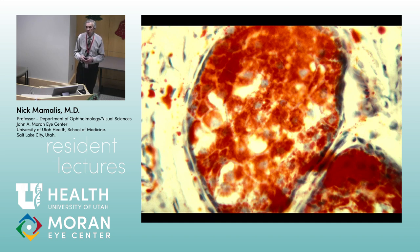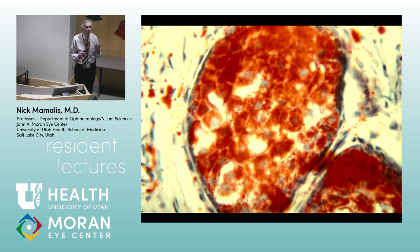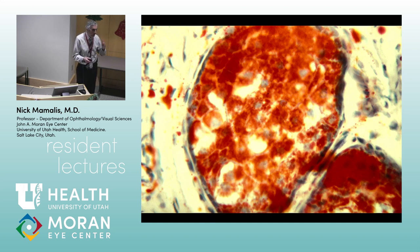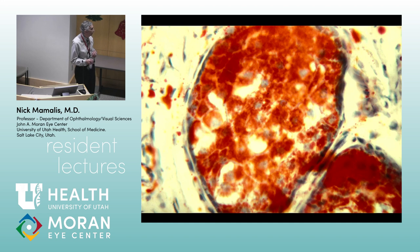What's important to realize before you do an Oil Red O stain? The tissue has to be fresh. If you want to do an oil stain on a meibomian gland, you cannot process it, because normal processing leaches out all of the oils during dehydration. So you have to have fresh tissue.